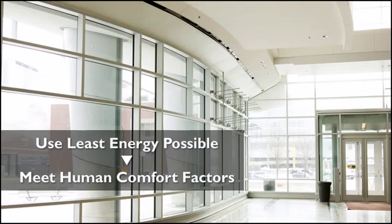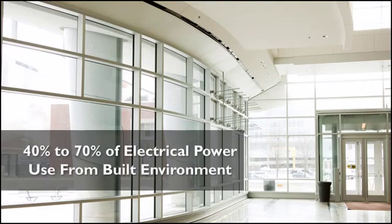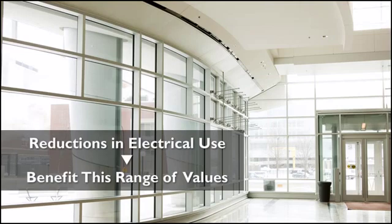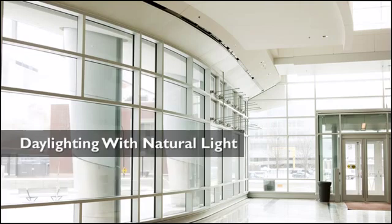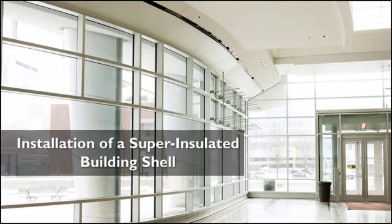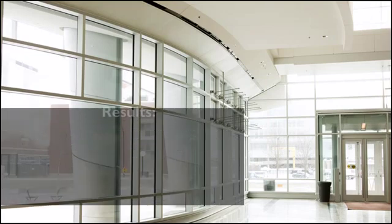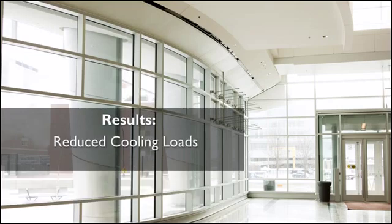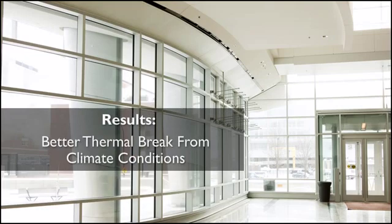There are a wide variety of studies in print that indicate the built environment accounts for anywhere from 40% to 70% of available electrical power use. Reductions in this use will benefit this range of values regardless of which study you accept. This could include the use of daylighting with natural light, ventilation from available trade winds, renewable energy sources, and possibly installation of a super-insulated building shell to help reduce energy demands. Each of these possibilities results in a lowered fossil fuel energy requirement due to lowered heat loads, reduced cooling loads, and better thermal break from climate conditions.